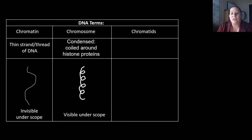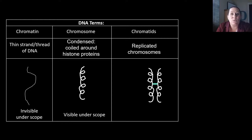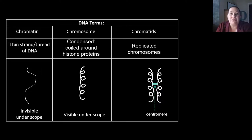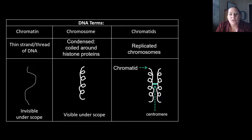Chromatids are a little different — these are when the chromosome becomes replicated. There are actually two of them connected together by a center area called the centromere. If you break that word apart, 'centro' means center and 'mere' means part, so it's telling you it's the center part between these replicated chromosomes. Each of these is known as a chromatid, and when they are connected together like this, we call them sister chromatids.